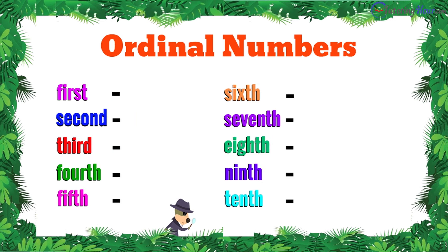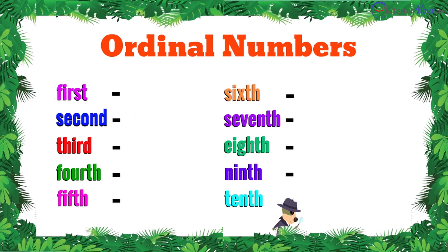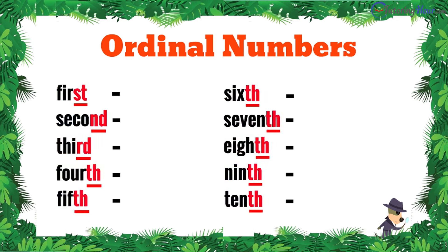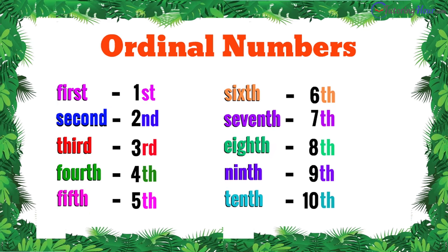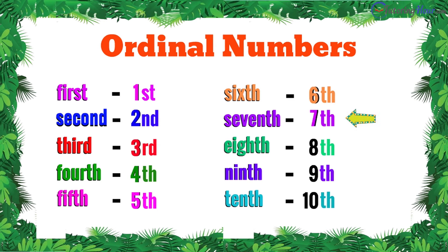Now let's take a look at how to write them as numerals. To convert the cardinal numbers to ordinals, all we need to do is pick the last two letters from the word form and add it to the number. We have first, second, third, fourth, fifth, sixth, seventh, eighth, ninth, and tenth.